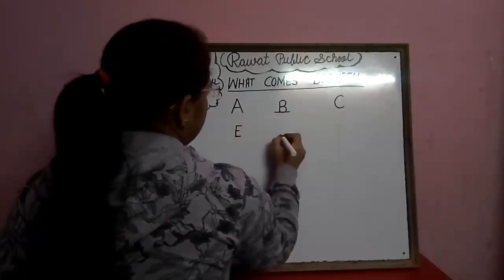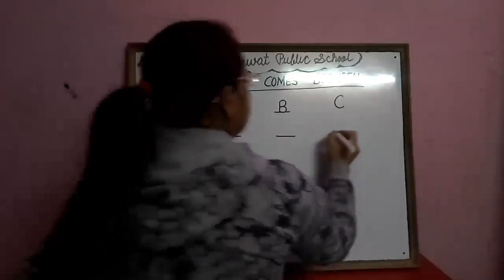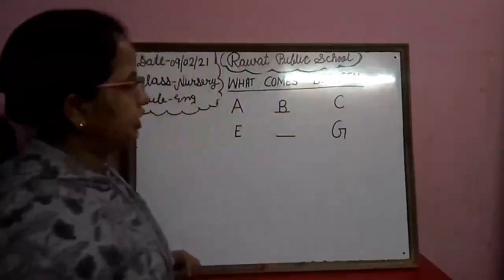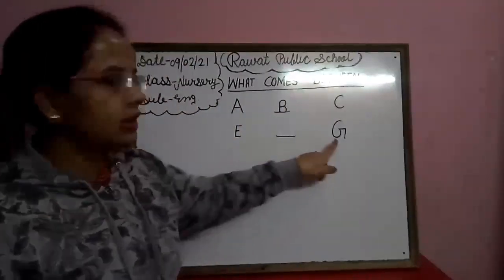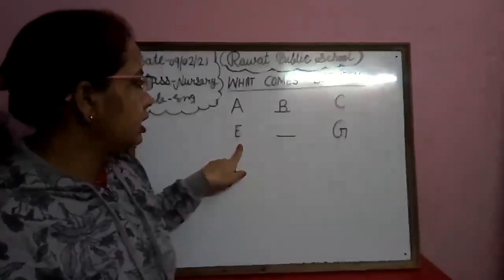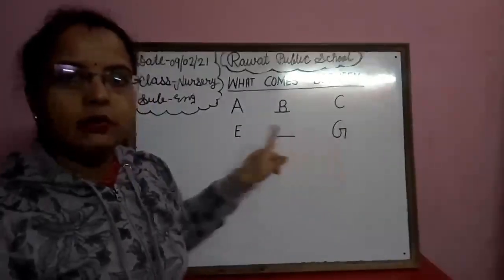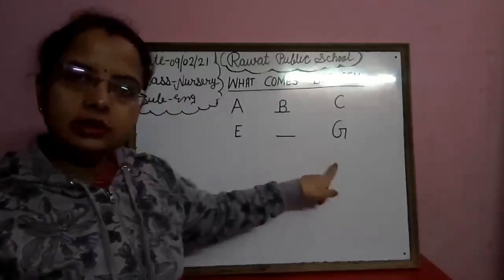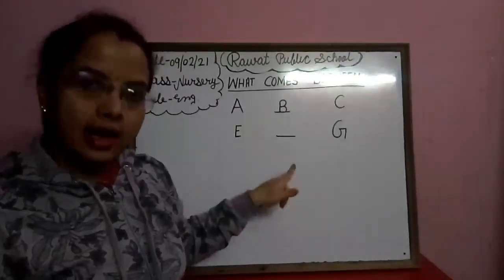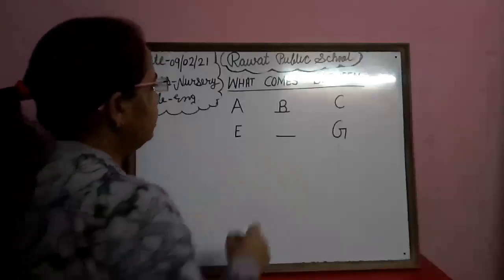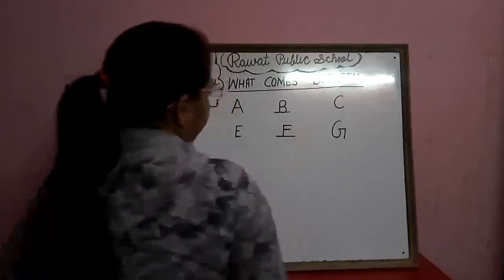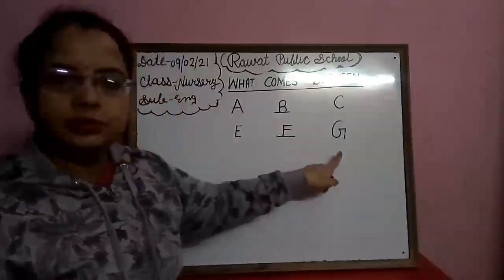E and G. What comes between E and G? E aur G ke beech mein konsa letter aata hai? F. So we will write here F. E, F, G.